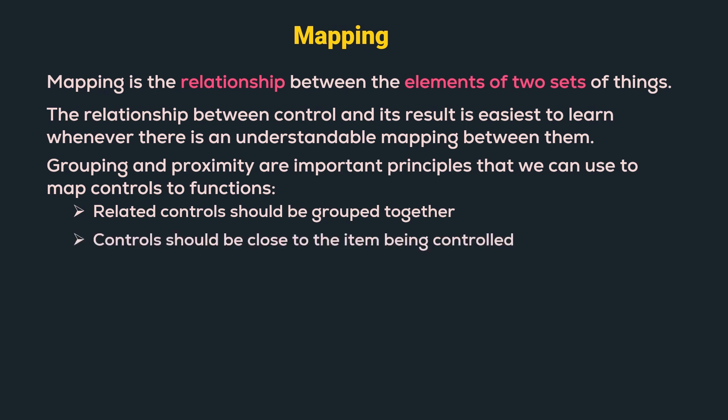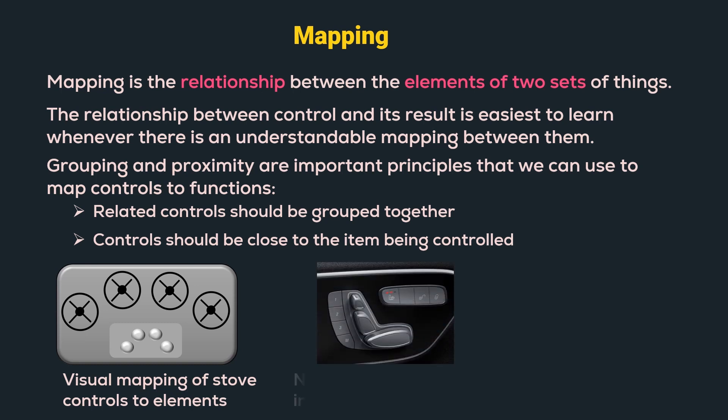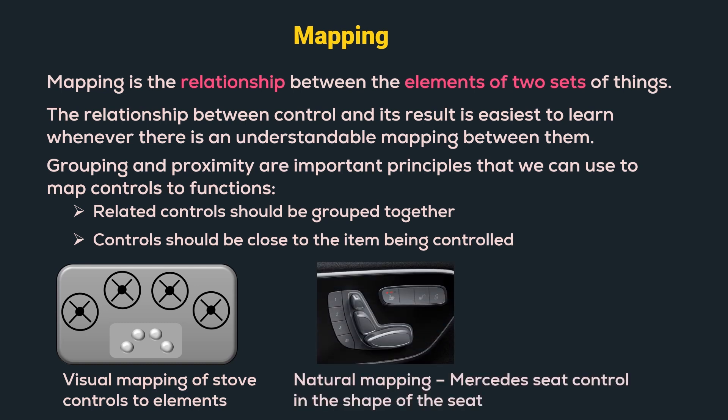Let us understand with some examples. In a gas stove, there is a visual mapping of the stove controls to the burners, so we can easily identify which knob controls which gas burner. Another example is a Mercedes seat control shaped like the seat itself, indicating natural mapping where the control follows the same spatial organization as the object being controlled.